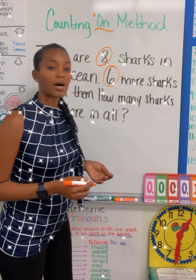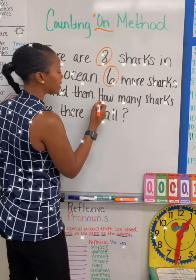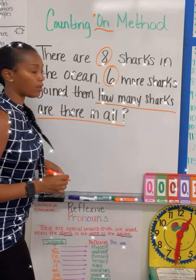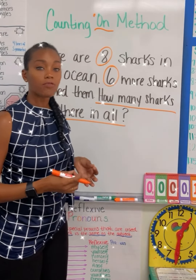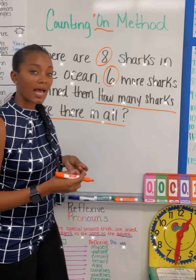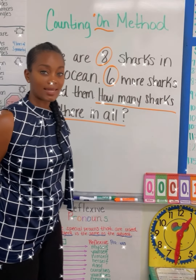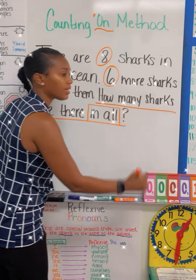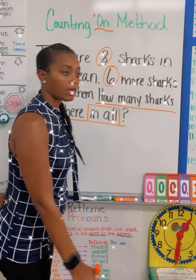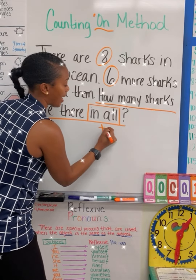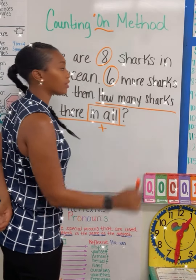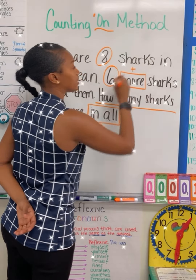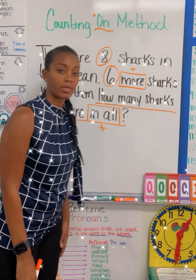The next thing we want to do is underline our question. Our question is: how many sharks are there in all? That tells me what I'm looking for in my problem. After that, you want to box in the keywords. My keyword here, 'in all,' tells me that my operation is addition. I also see another clue word, 'more,' which tells me again that my operation is going to be addition.